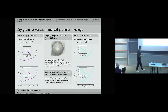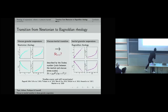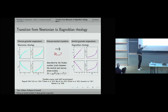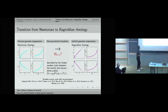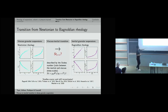Our goal is to understand how we go from something that is overdamped in a viscous suspension to something more inertial in a dry granular system. We will describe this transition using the Stokes number, which is the ratio between kinetic inertial stresses and viscous stresses.